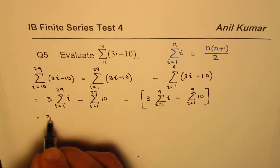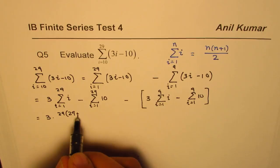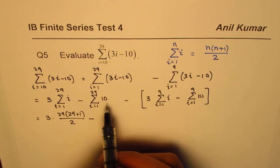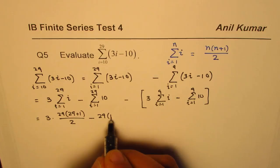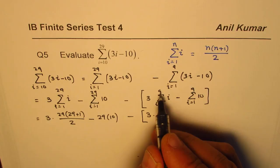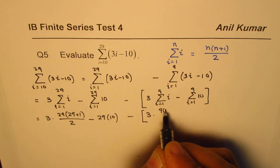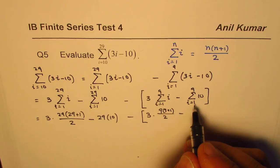So this sum, applying the formula, i is 29 for us, so that gives us 3 times 29 times 29 plus 1 divided by 2. Minus now that's the constant, so 29 times we are adding 10, so we get this as 29 times 10. And here within this bracket we get 3 times 1 to 9. n is 9 here, so it'll be 9 times, let me write, 9 plus 1 divided by 2, minus the 9 tens.